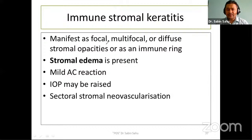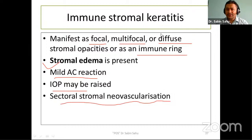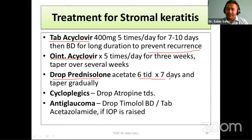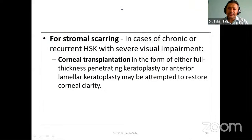Immune stromal keratitis may manifest as focal, multifocal, or diffuse stromal opacity or as an immune ring. Stromal edema is present, but epithelial defect is absent. IOP may be raised. Treatment of stromal keratitis consists of antivirals and steroids: tablet acyclovir 400 mg 5 times a day for 7 to 10 days, then twice daily for long duration to prevent recurrence. Ointment acyclovir 3% initially 5 times a day for 3 weeks, then tapered. Drop prednisolone 6 times a day for 7 days, then gradually tapered. For stromal scarring from chronic or recurrent herpes stromal keratitis with visual impairment, corneal transplantation may be the only option.